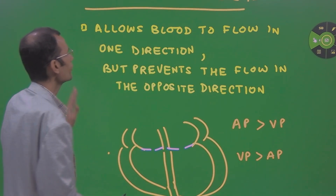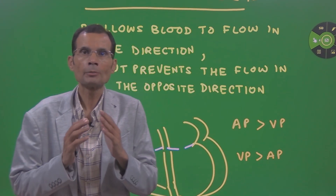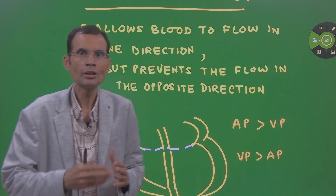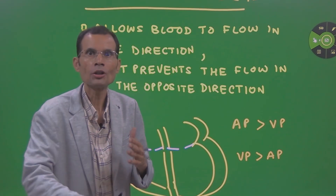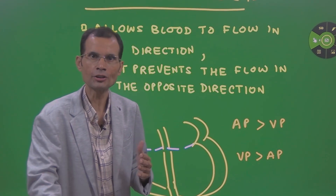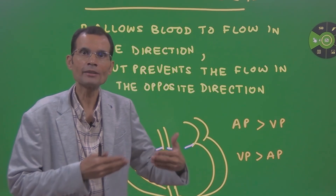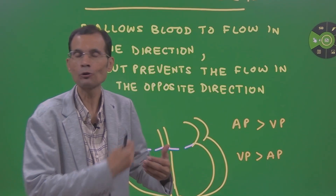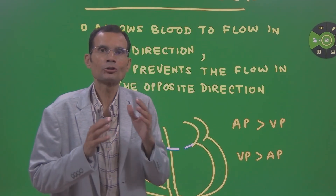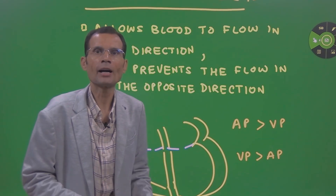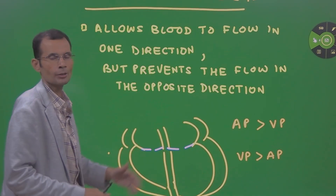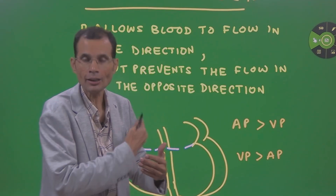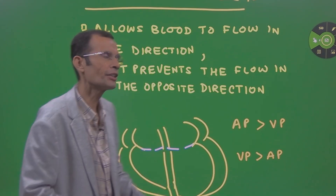What is the function of a valve? A valve, when it is open, allows the blood to flow in one particular direction, and when the valve is closed, it prevents the backflow of blood — flow of blood in the opposite direction. That is the function of a valve: allow unidirectional blood flow, but not allow the blood to go in the opposite direction.